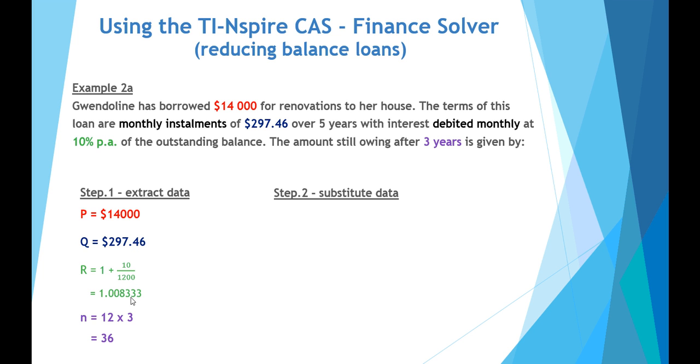This is three years, and so, 12 monthly payments over three years gives us a terms of 36 payments.